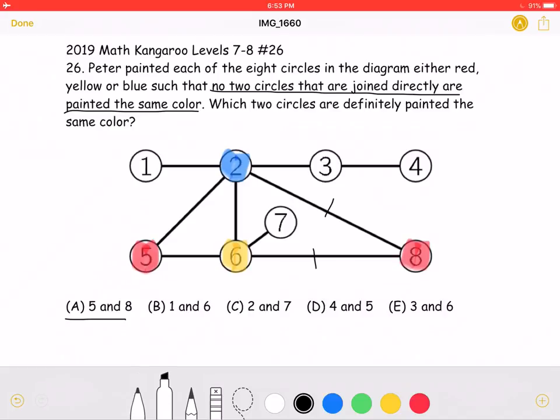But let's go through the rest of the answer choices. For B, one and six, if the two is blue and the six is yellow, then the one could be either yellow or it could be red, because it only is adjoining the two, which is blue. However, the problem states which two circles are definitely painted the same color, and one and six do not necessarily have to be painted the same color. So answer choice B is wrong.